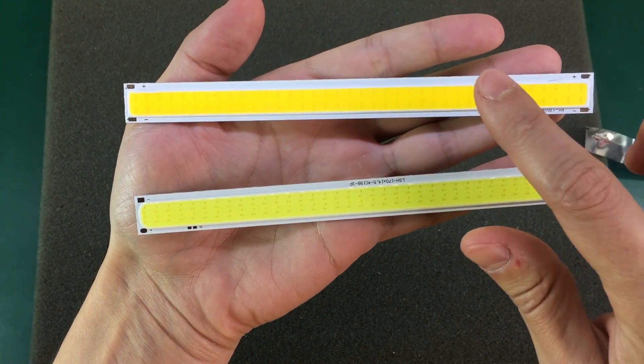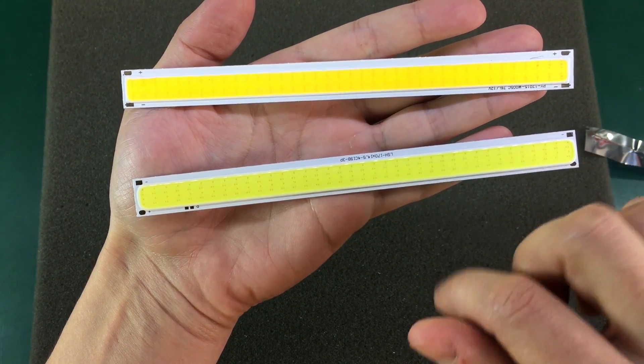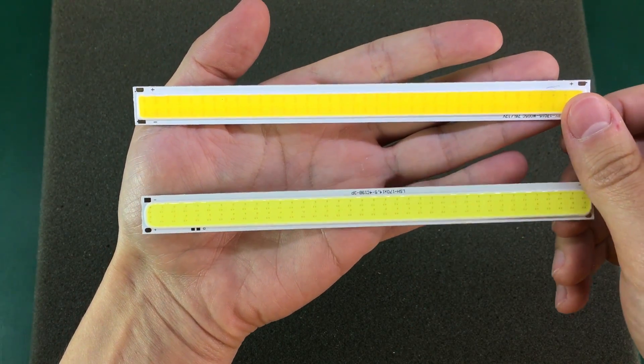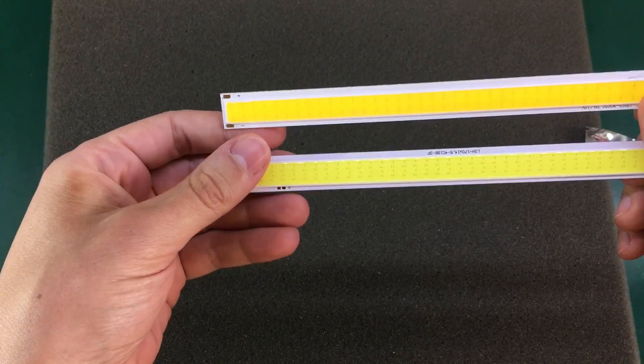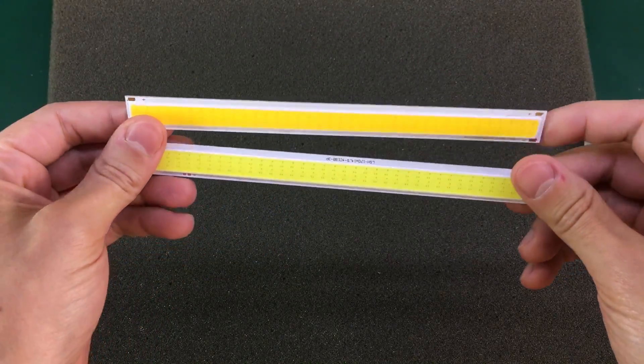I got a warm white and a cold white variant, and maybe I can find some nice heat sinks for this so that I can use them for lighting these videos.